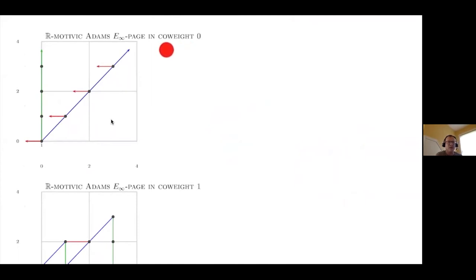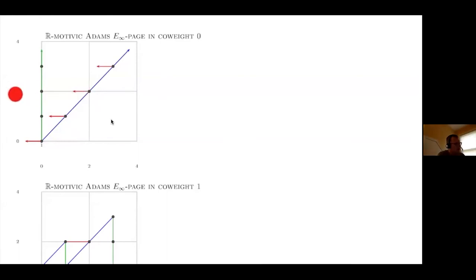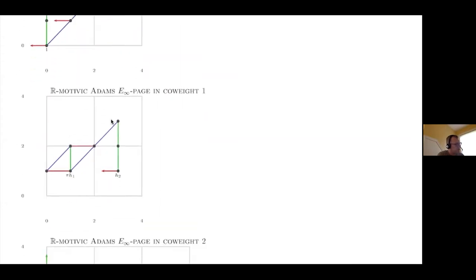These charts represent the R-motivic Adams E-infinity page — so I'm showing you something about homotopy groups, not R-motivic Ext. I've organized the charts by co-weight, which is the difference between the topological degree and the weight. Some call this 'the line' — the zero line, the one line, and so forth. I used to call it the Milnor-Witt degree but 'co-weight' works better in the equivariant context as well.